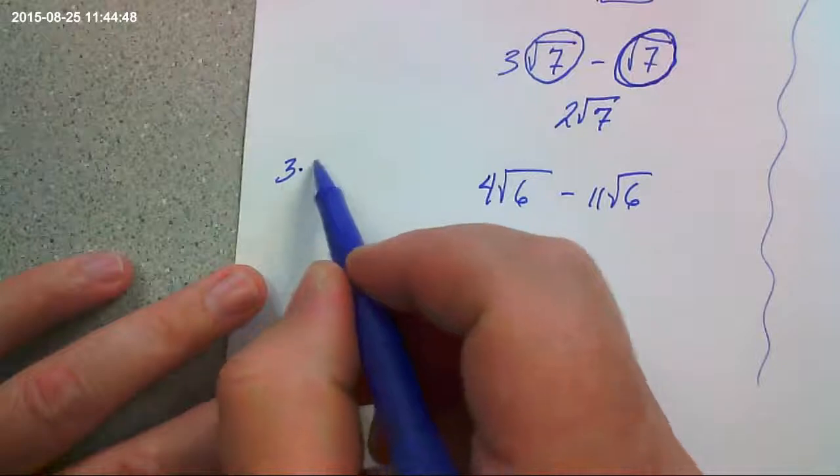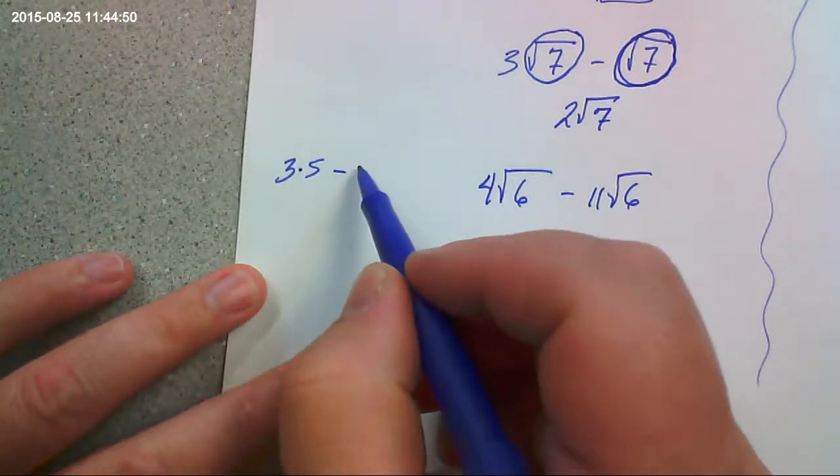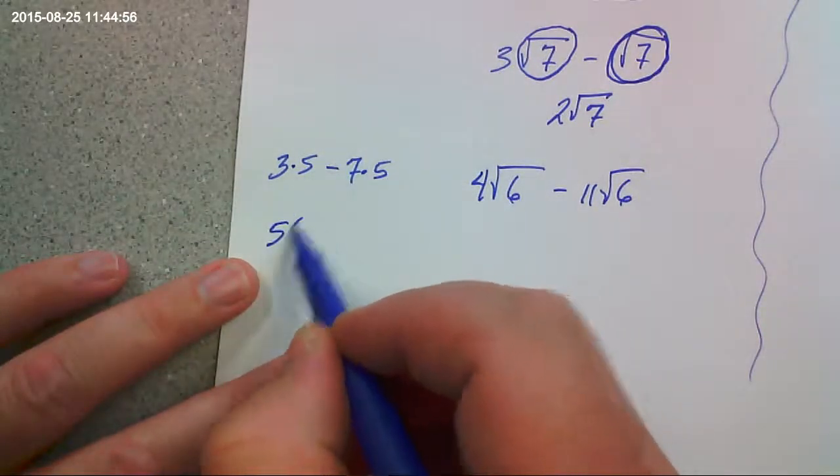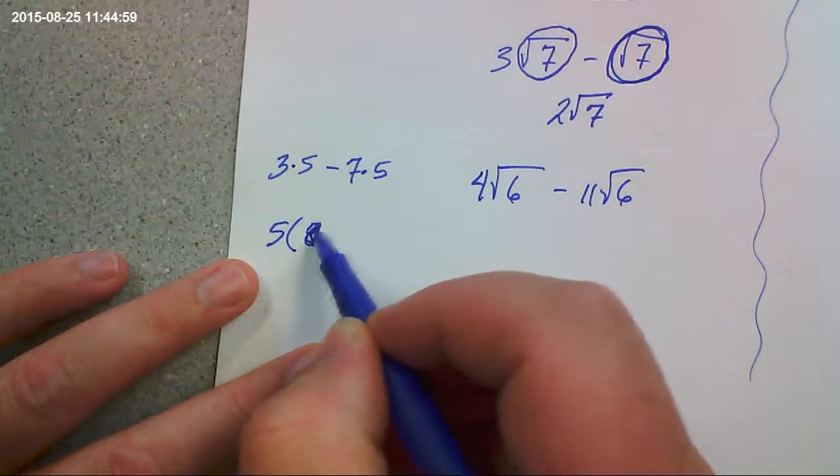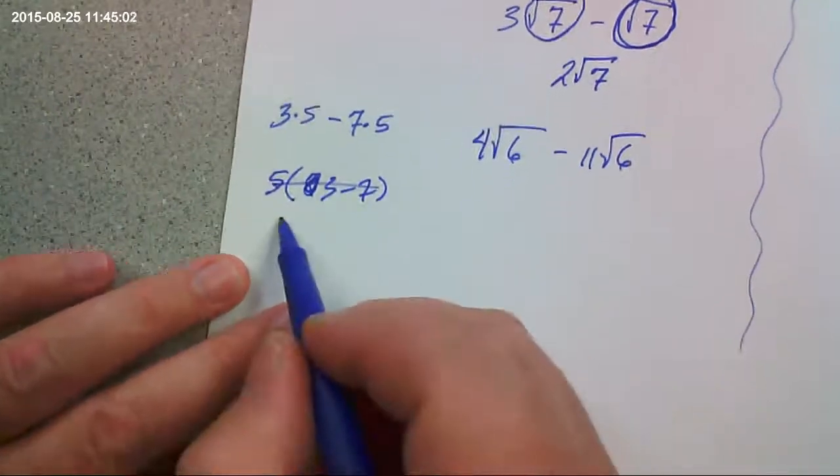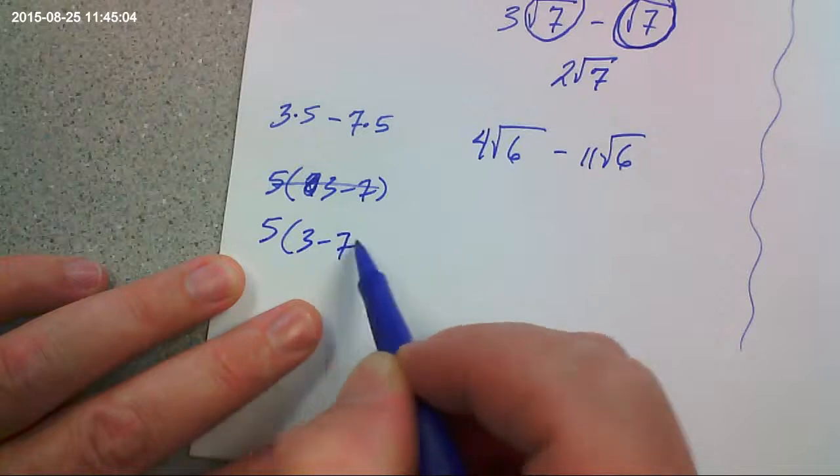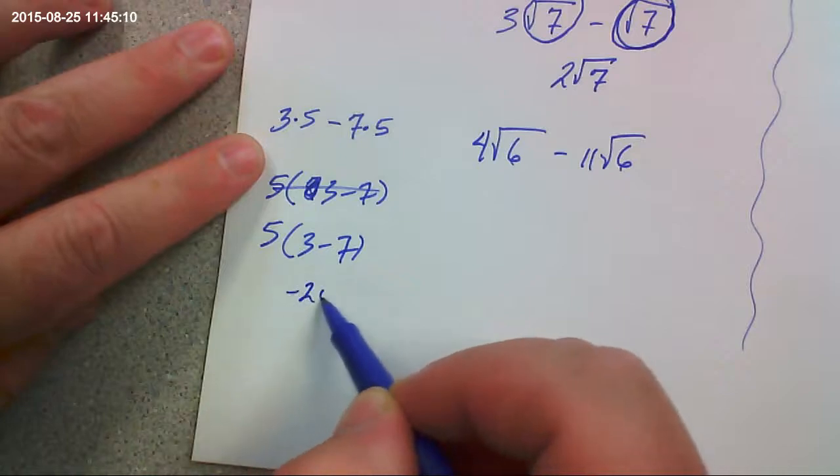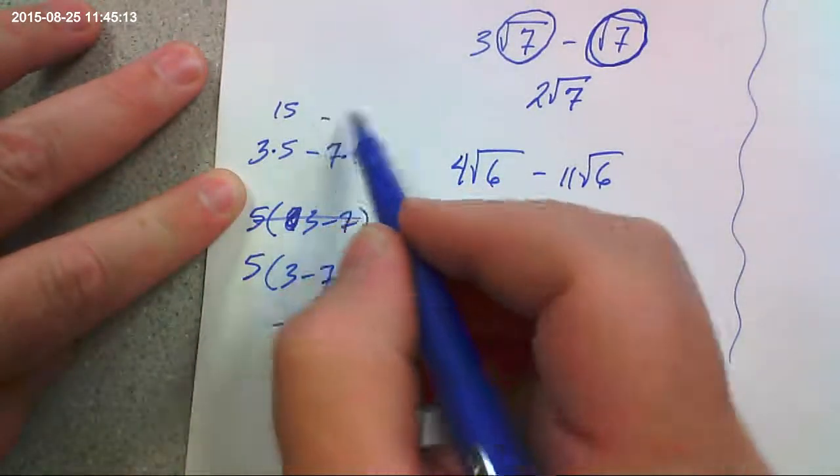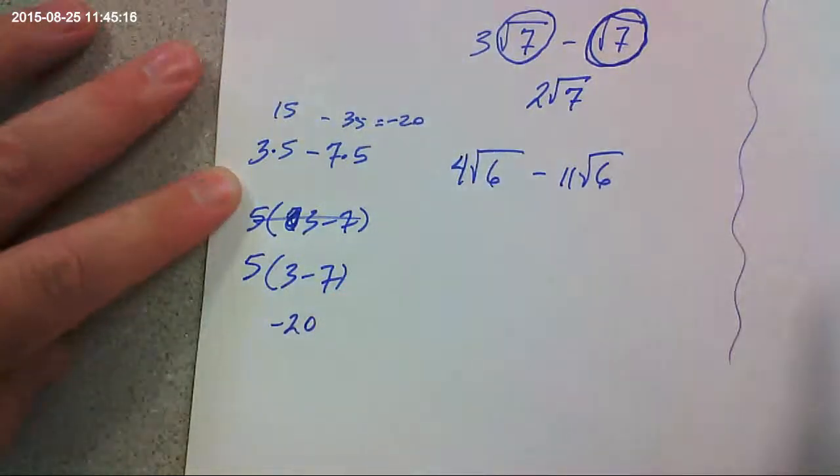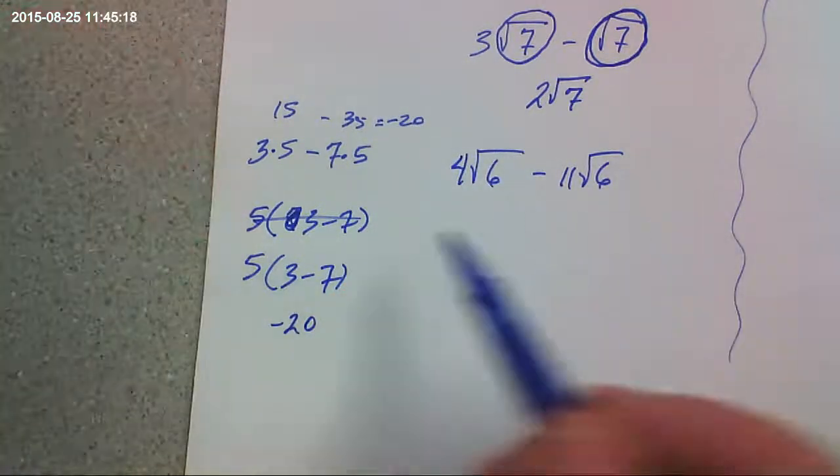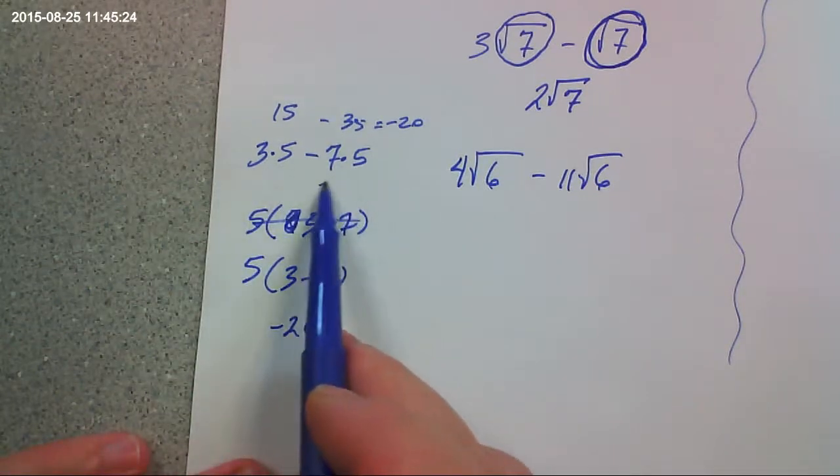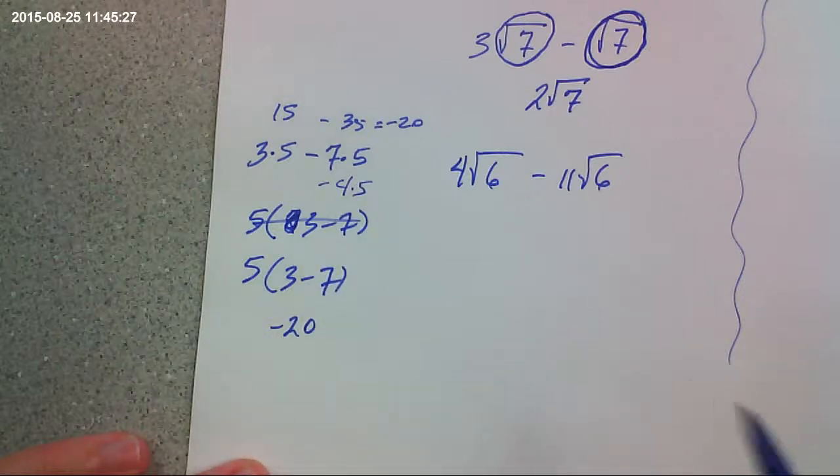But let's say we had 3 times 5 minus 7 times 5. That is the same as 5 times 3 minus 7. And I'll write it again for you. These two things are the same. You see, this is negative 4. 5 times negative 4 is negative 20. Here, 15 minus 35, that's also negative 20. So what I'm showing you is that you're actually combining 5's. 3 fives minus 7 fives, whether it be negative 4 fives, which is negative 20.